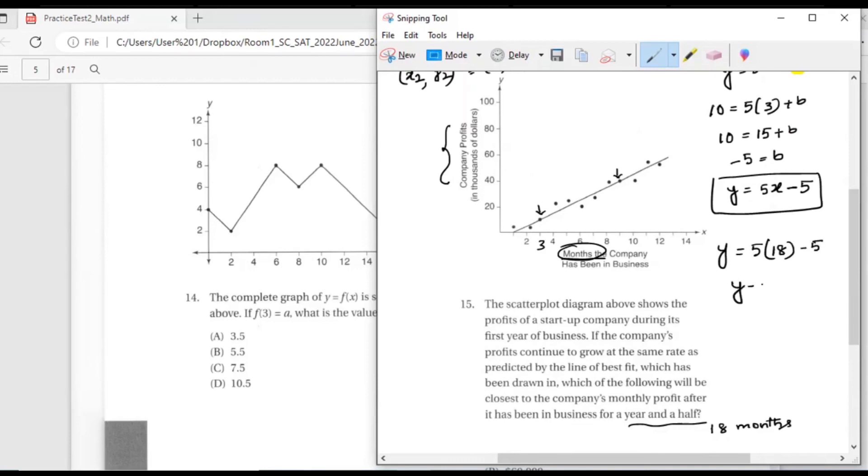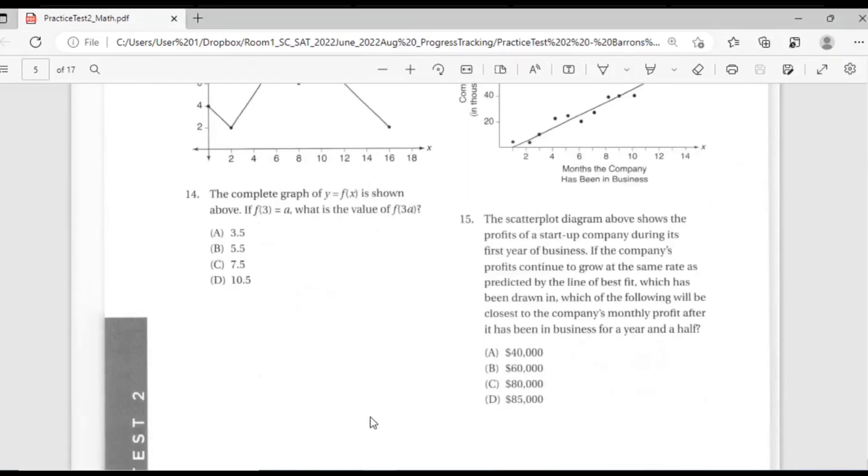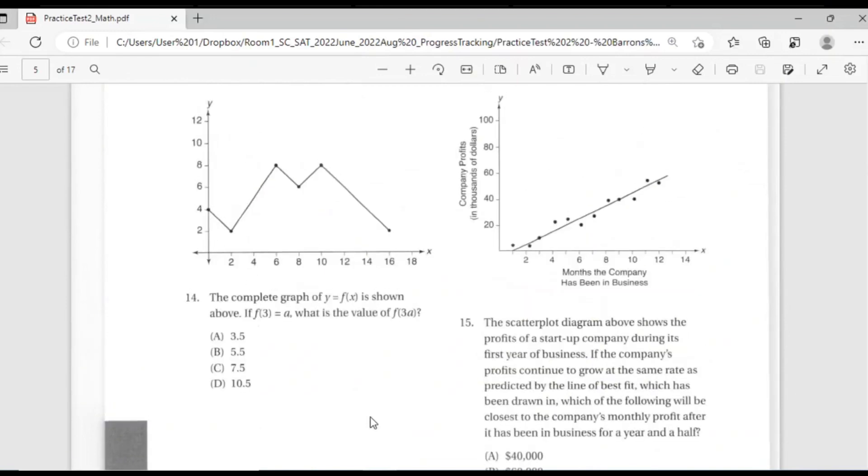So what is 18 times 5? 90. What is 90 minus 5? 85. Do I have 85 as a choice? Yes, 85,000. The y coordinate is in thousands of dollars. Even though you get 85, that is in thousands, so the answer is $85,000.